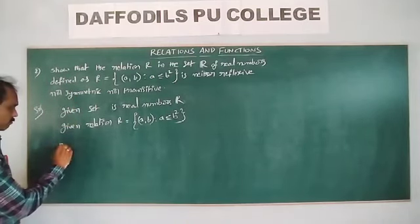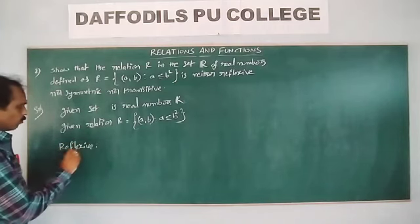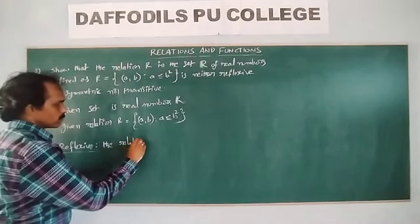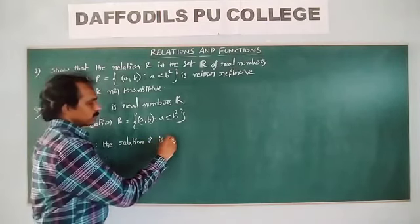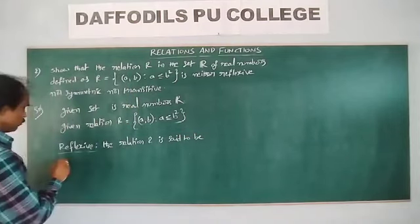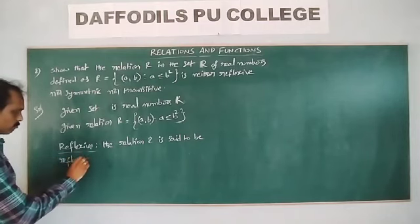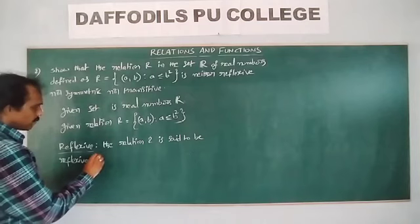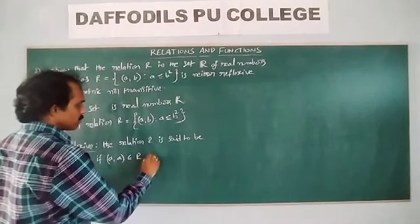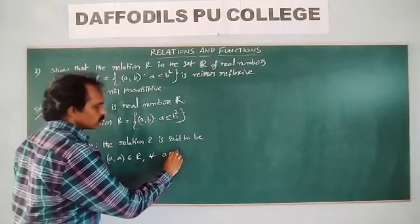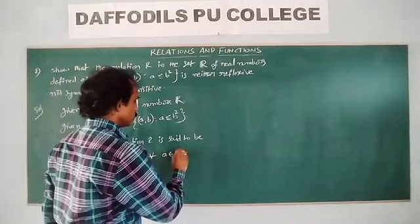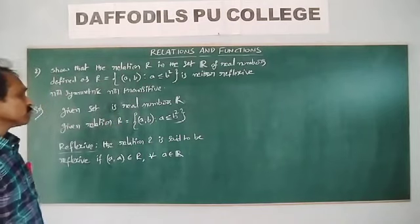Solution. Given set is real numbers. Given relation R = {(a, b) such that a ≤ b²}. Now, what is the reflexive definition? The relation R is said to be reflexive if (a, a) belongs to the relation for each a belonging to real numbers.